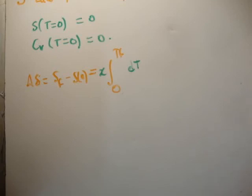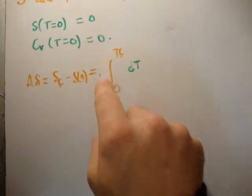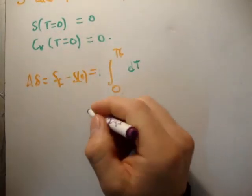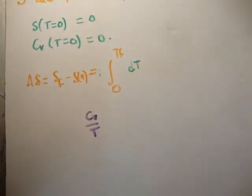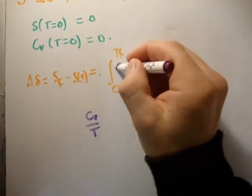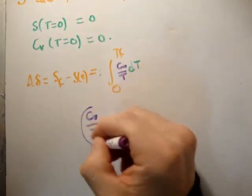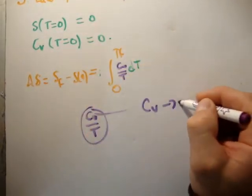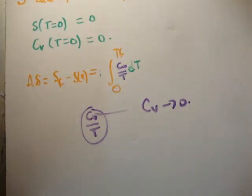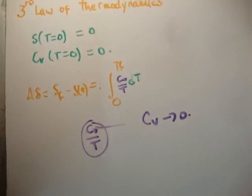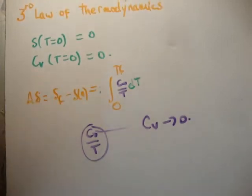Finally, I said here this factor was C sub V over T. Now in order for this integral not to diverge, this implies that C sub V also goes to zero as the temperature goes to zero. That's the implication of this particular equation. So that means we have two different ways of saying the third law of thermodynamics. At zero Kelvin, the multiplicity is one, entropy is zero, or the heat capacity is also zero.